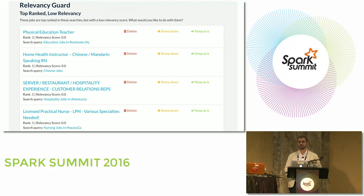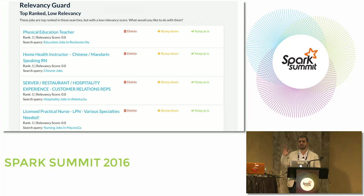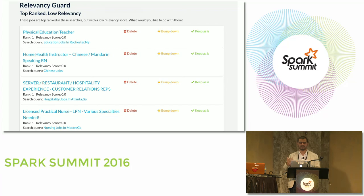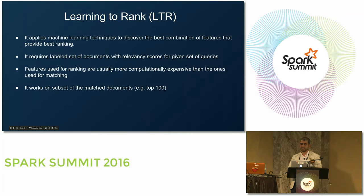We built additional products on top of this system. One is the Relevancy Guard: it identifies all documents ranked in the top three positions for any query that have a relevancy score of zero — meaning no one clicked on them. This indicates bad results ranked at the top. Every day we update this list and a site security team reviews these jobs: if they are spam, they're removed; if they game the system, they're pushed down; otherwise they're kept.